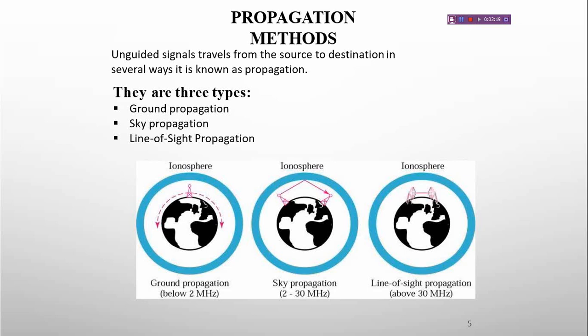Next, the propagation method. Unguided signals travel from the source to destination in several ways, known as propagation. There are three propagation methods: ground propagation, sky propagation, and line-of-sight propagation.